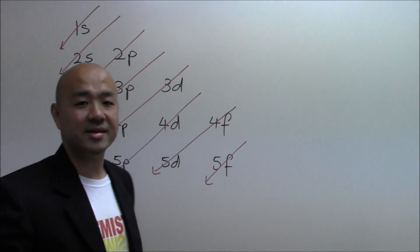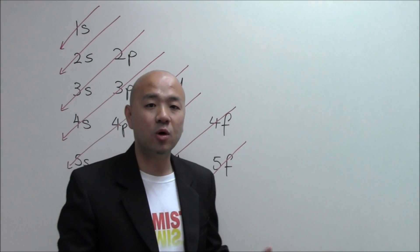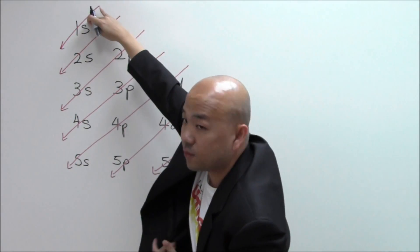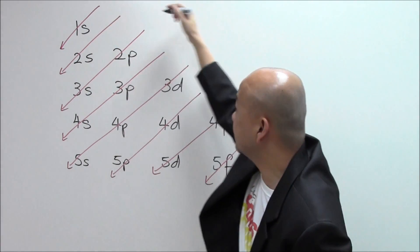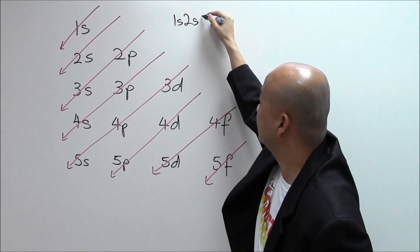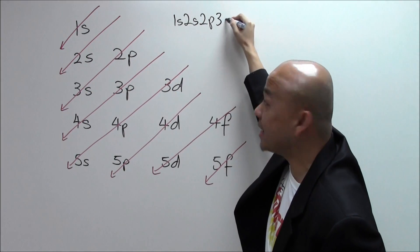Once we have these diagonal lines in place, then we are able to write down the order of the orbitals and we will go like this. Starting with 1s, follow the red arrows here. So we have 1s followed by 2s and 2p.